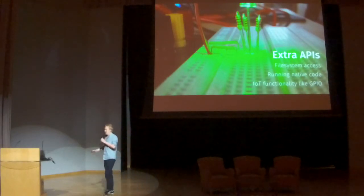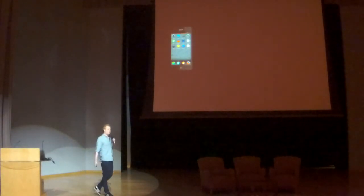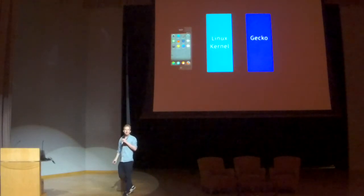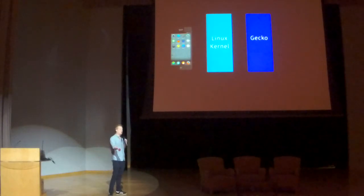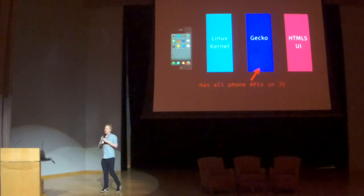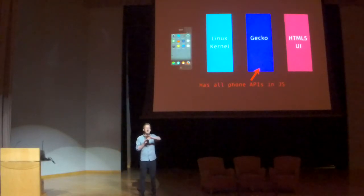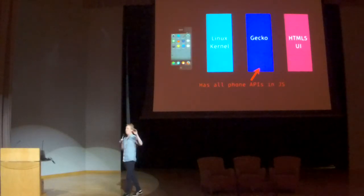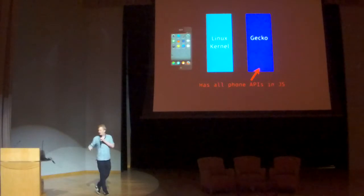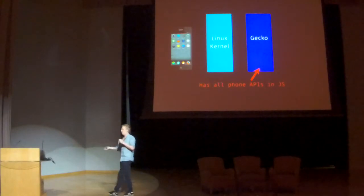And it basically works like this. We have the mobile phone, we have the Linux kernel running on top of that — it's an open source kernel. On top of that, we have Gecko, the render engine and JavaScript engine of Mozilla. And on top of that, we have an HTML5 UI. Because everything in the UI is implemented in HTML5, the Gecko JavaScript engine has bindings to everything on the phone — from calling to messaging, et cetera. So if we remove the HTML5 UI, we basically end up with a mobile phone that just runs barebones Gecko: just a JavaScript engine with a bunch of bindings already there.